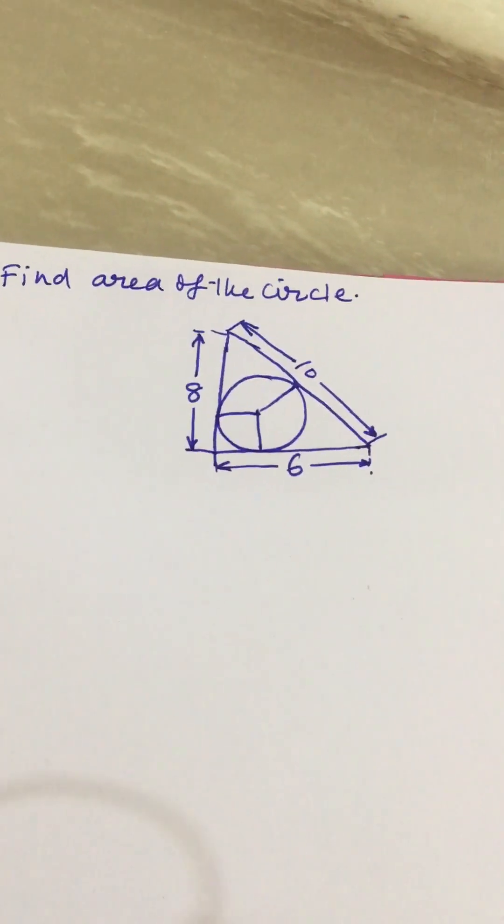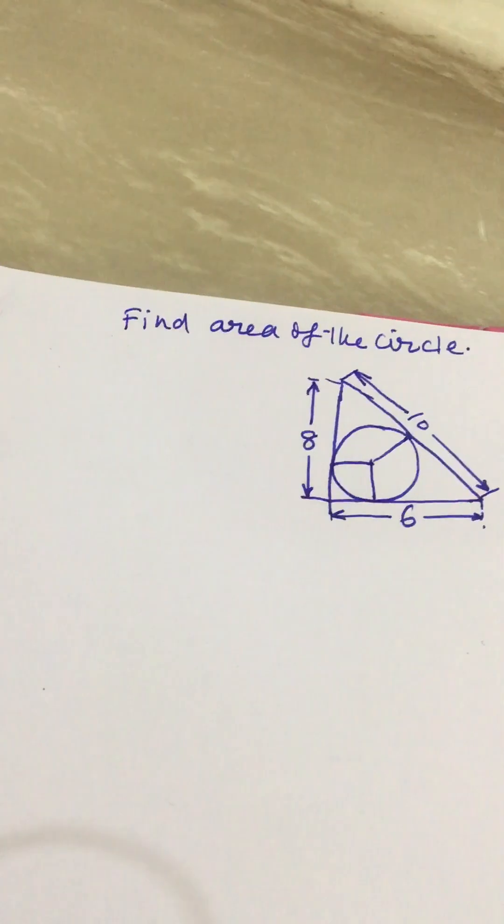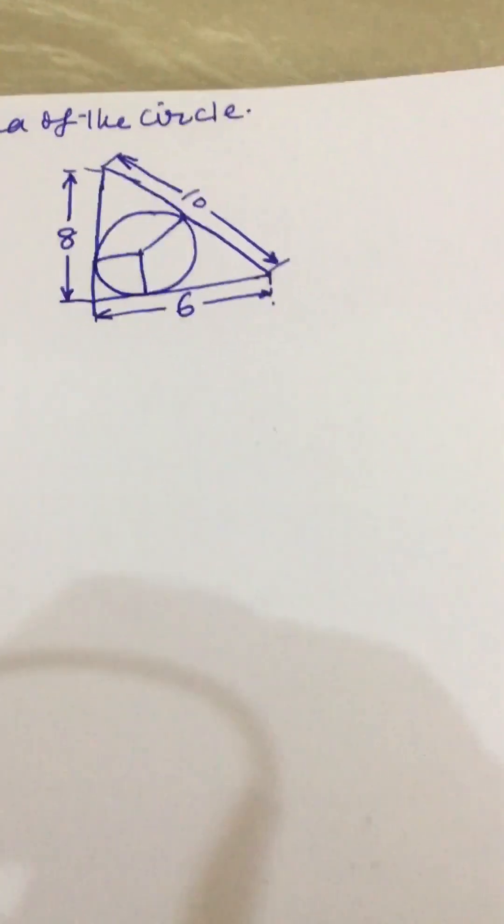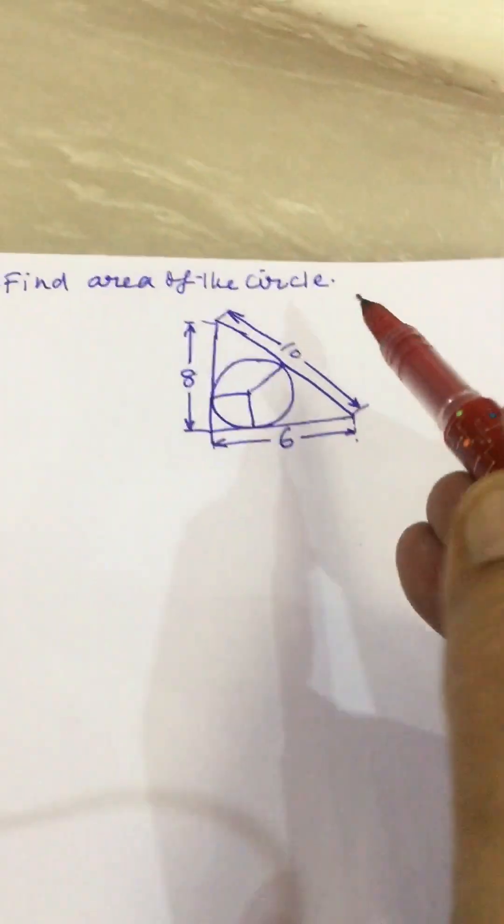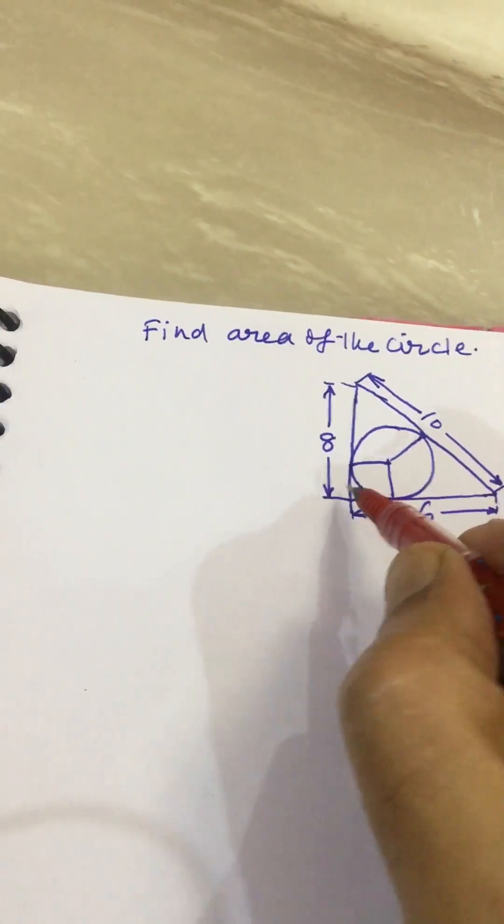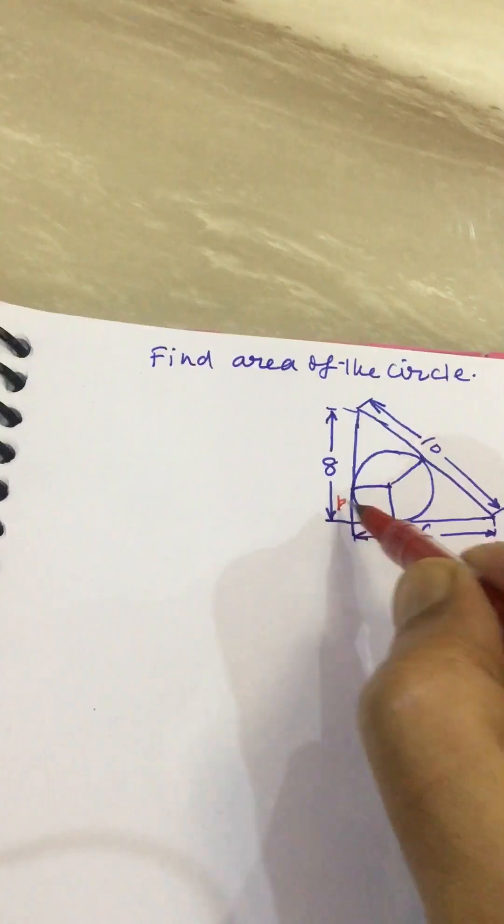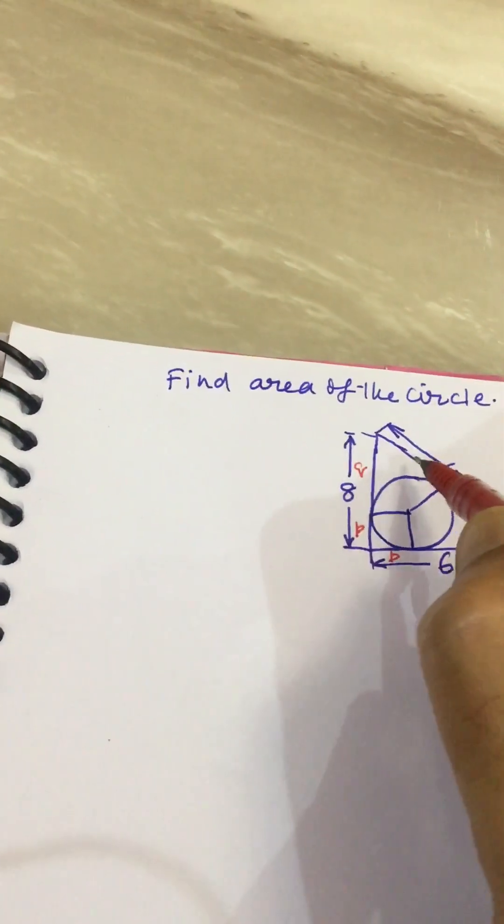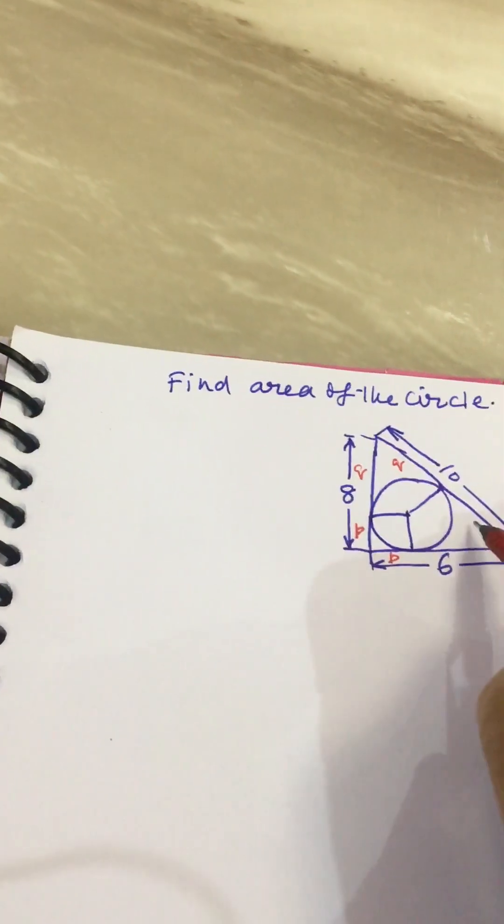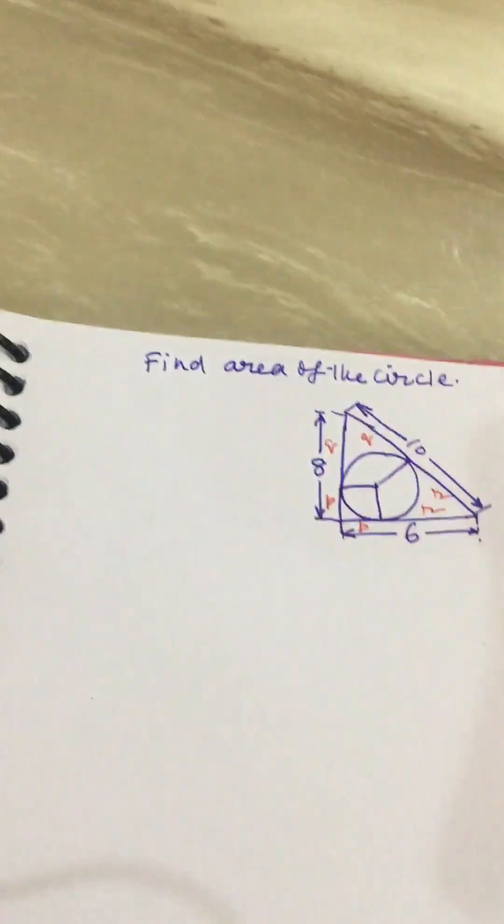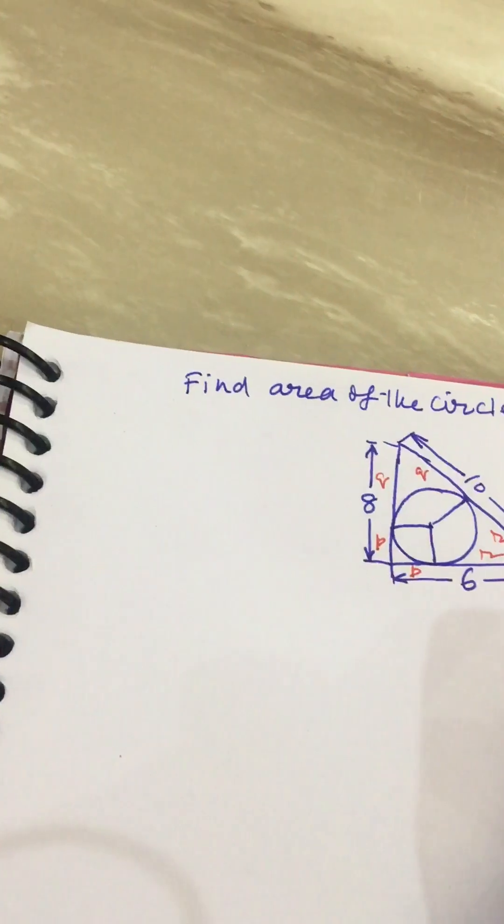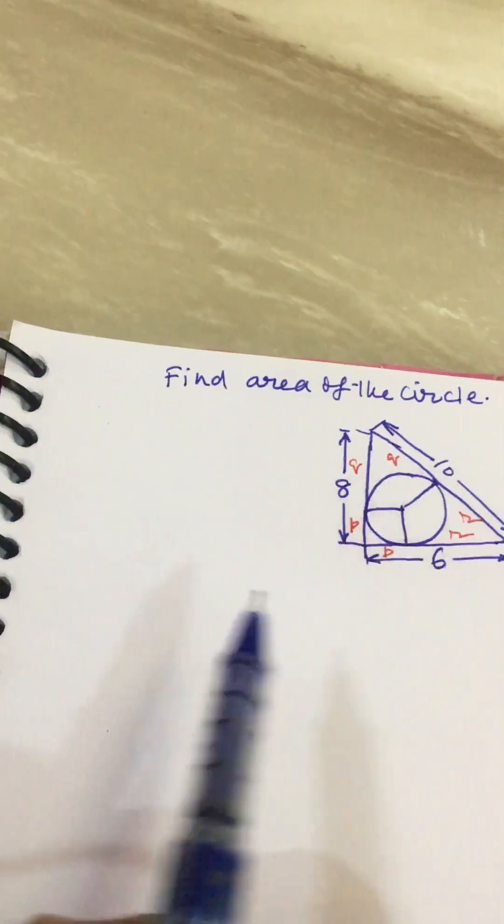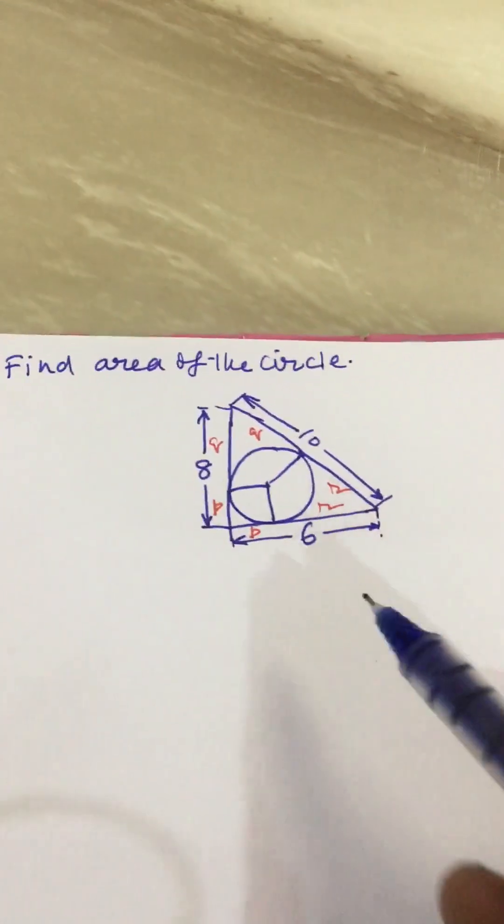To find the area of this circle, we will calculate the radius. Let this distance be P, so this will also be P. Let it be Q, and this will also be Q. Let it be R, this will be R, because these are the radius and these are the tangents from one point to the circle. The length will be equal.